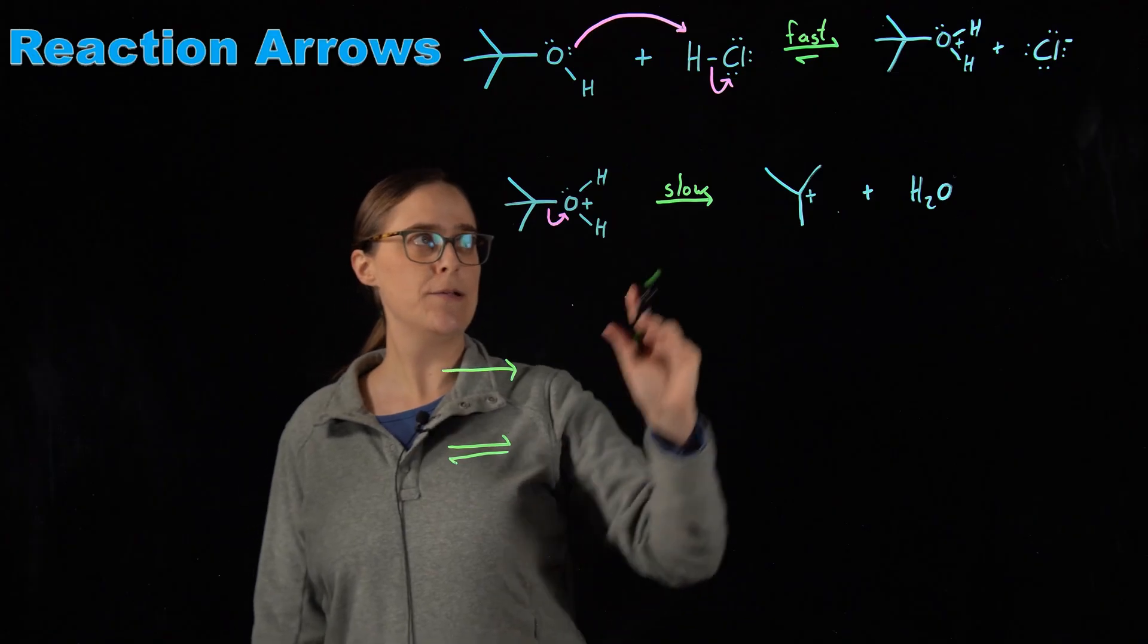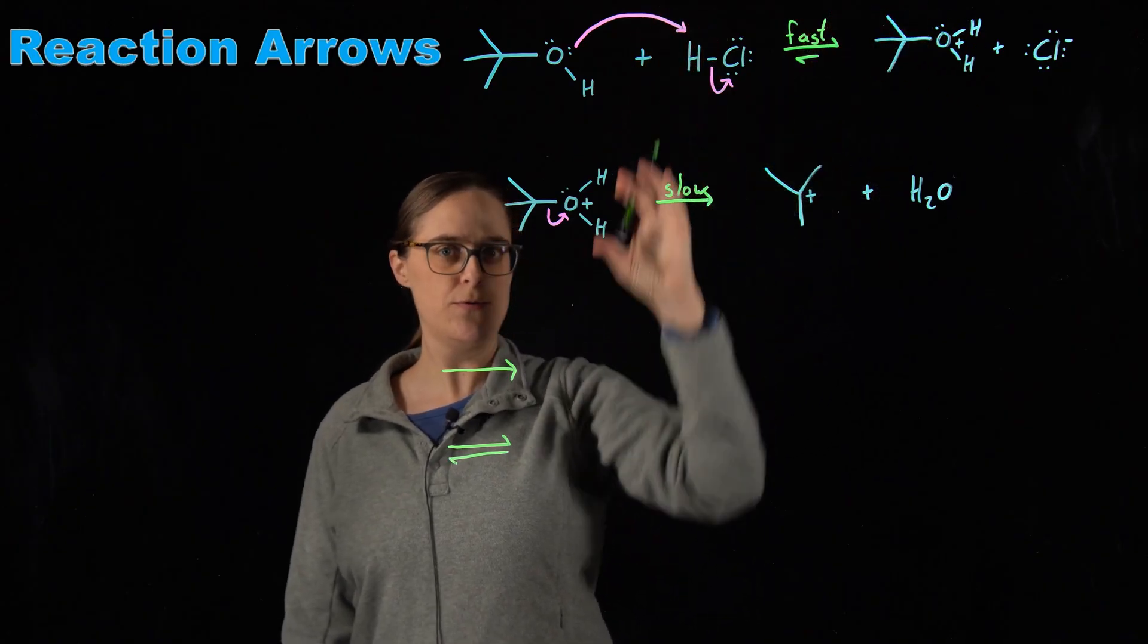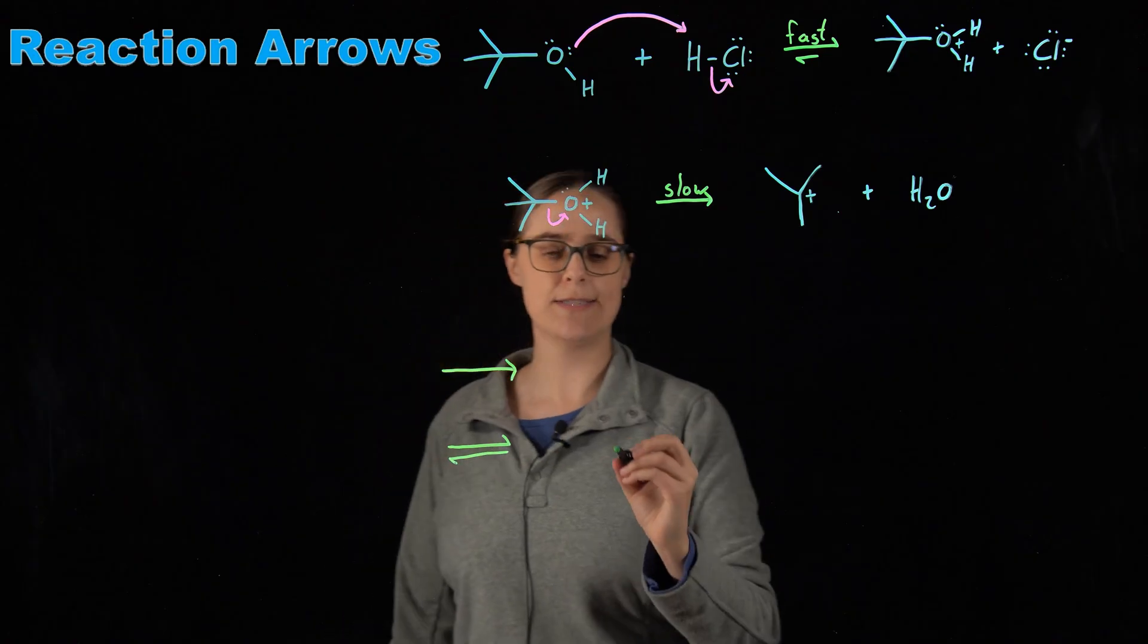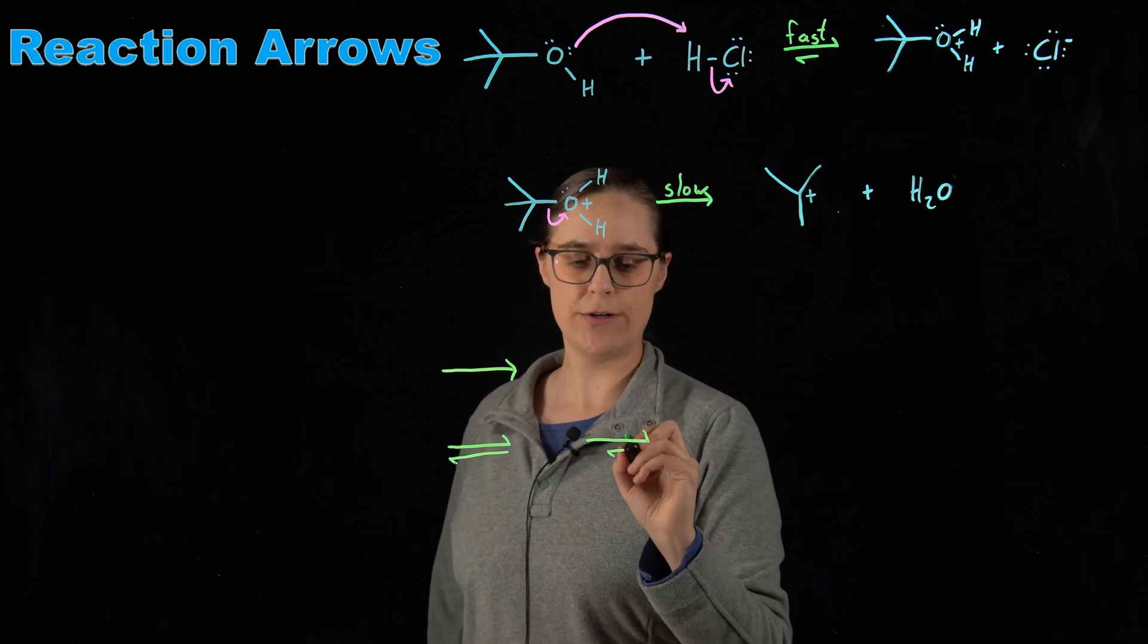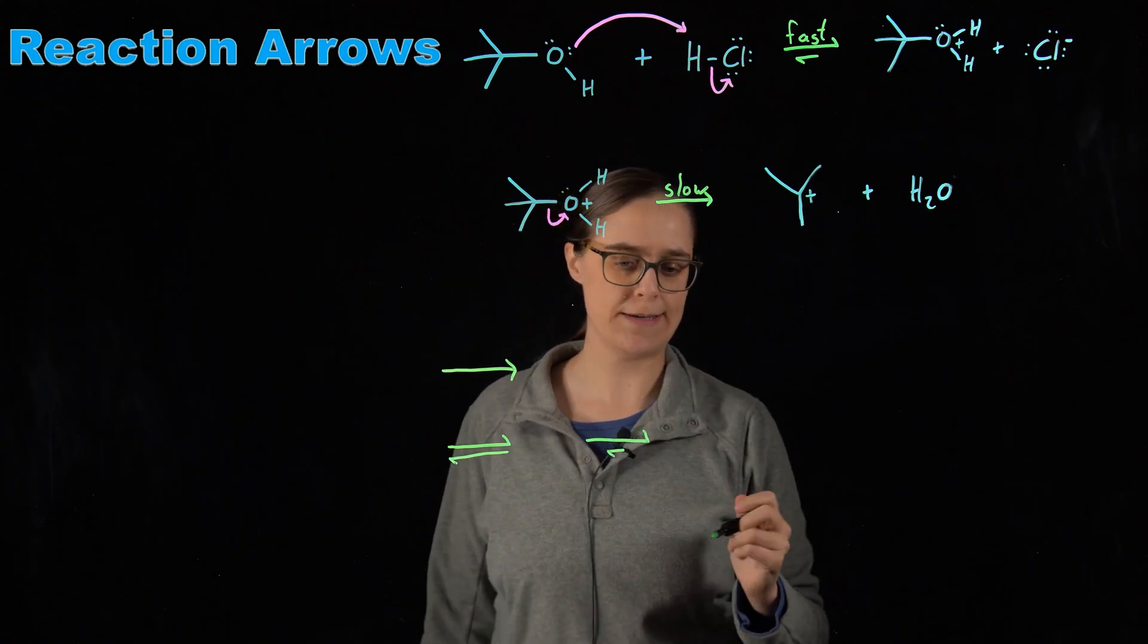We can also tell whether this step makes more products or more reactants based on the relative lengths of these lines. So if the line at the top pointing to the products is longer, that means there would be a higher concentration of products than reactants.